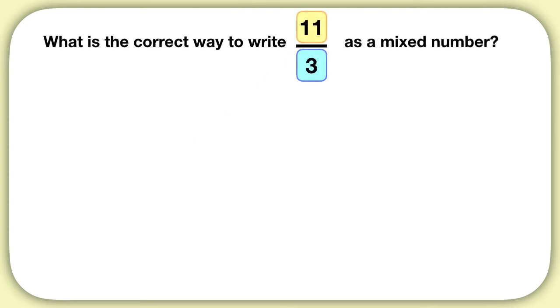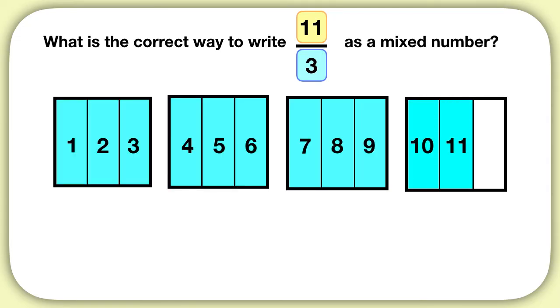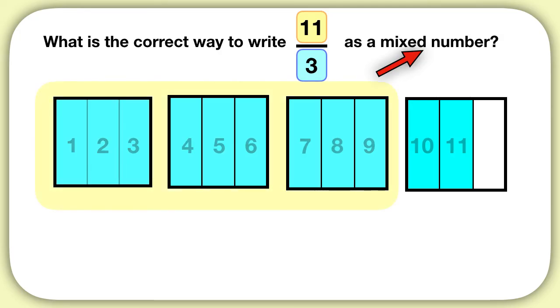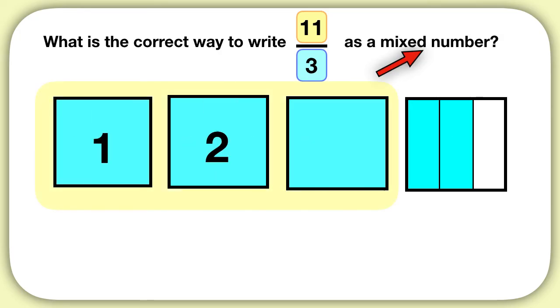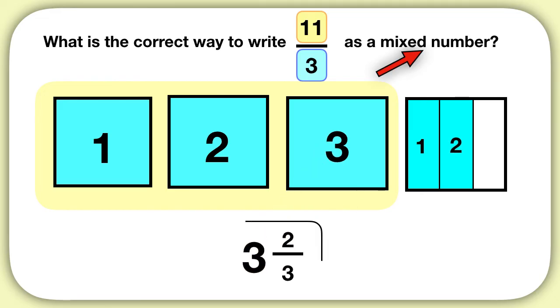Now it's time for you to practice on your own. What is the correct way to write 11 thirds as a mixed number? Once you had drawn out 11 thirds, to turn it into a mixed number you just needed to count how many whole squares you had. You had 1, 2, 3 whole squares. So this could be written as 3 wholes and then 2 thirds more — the mixed number 3 and 2 thirds.